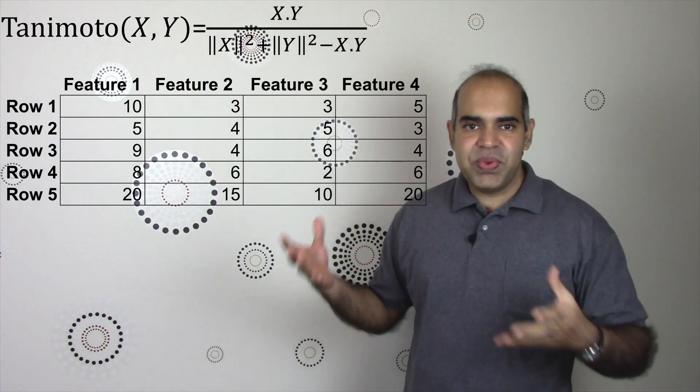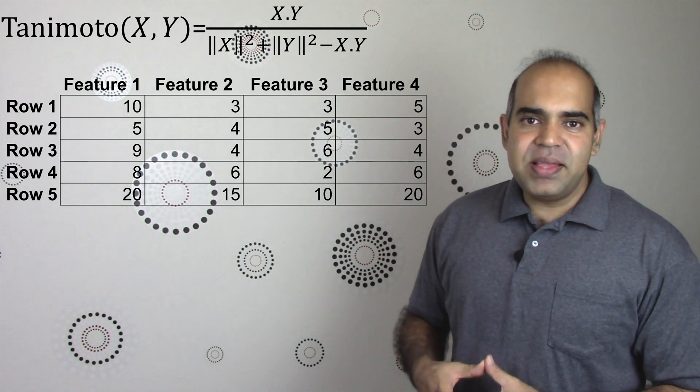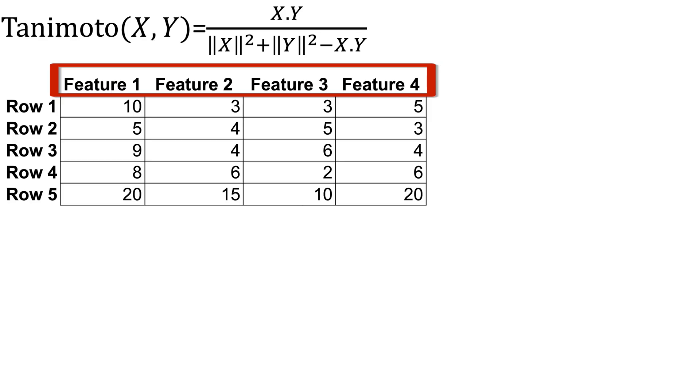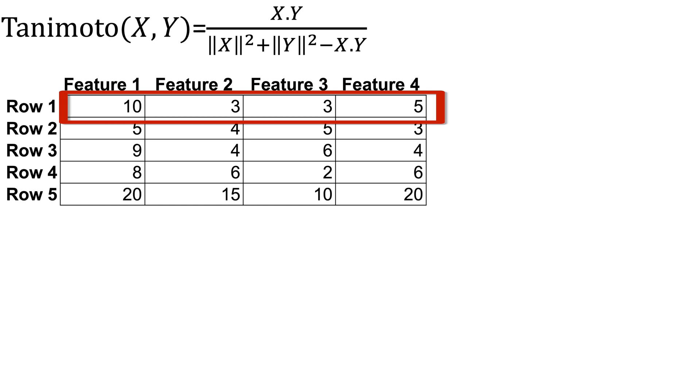Let us say that we have this four-dimensional table. That is, the table has four columns. That means each row or vector has four cells. Now consider row 1 and row 3 of this four-dimensional data table. Row 1 contains 10, 3, 3, 5 and row 3 contains 9, 4, 6, 4. What is the Tanimoto index between row 1 and row 3?